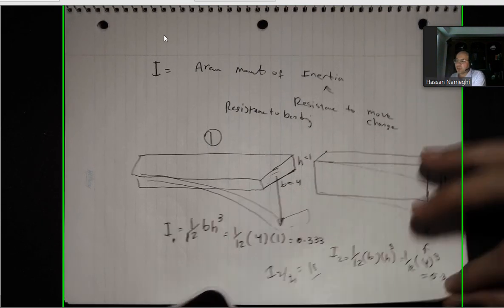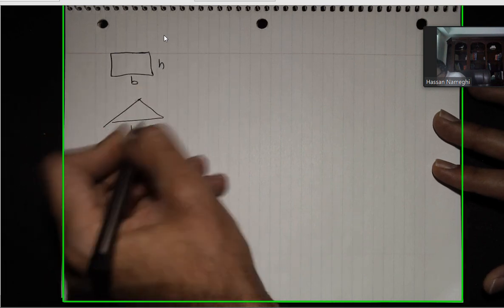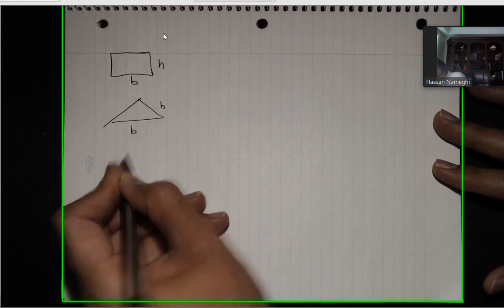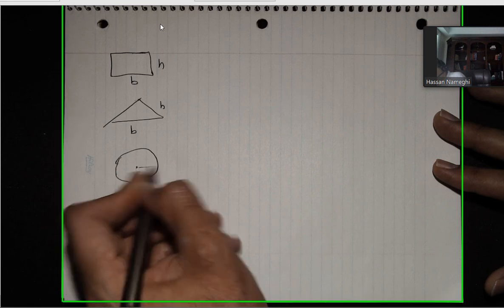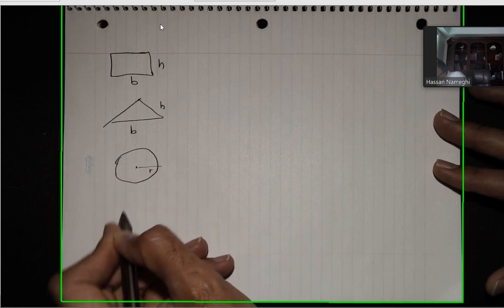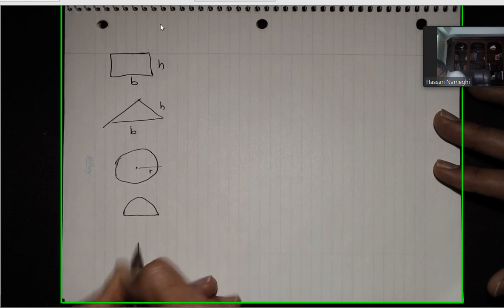So for moment of inertia, we're going to talk about those basic shapes we discussed: rectangle with base and height, triangle with base and height, then we have a circle with radius R, the semi-circle, and then the quarter circle.